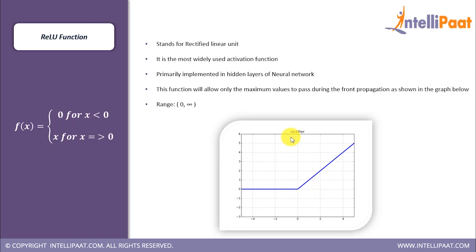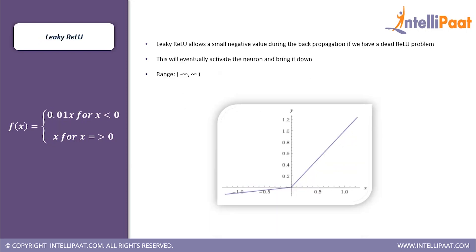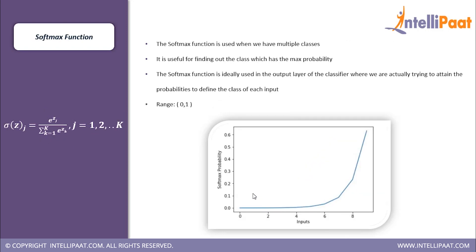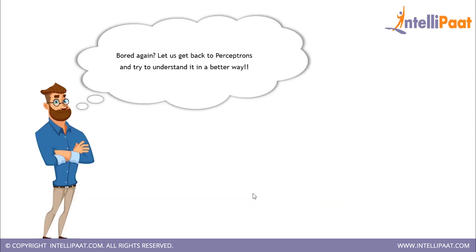The ReLU function — rectified linear unit — gives zero if the input is less than zero, and acts as an identity function for inputs equal to or greater than zero. ReLU is the most widely used activation function and is primarily implemented on the hidden layers of a neural network. Leaky ReLU is a modified version that, instead of completely removing the negative part, just lowers its magnitude. Finally, the softmax function is ideally used in the output layer for classification problems — it gives a set of probability values for each class, and the class with the maximum probability is the output. That covers all the activation functions.